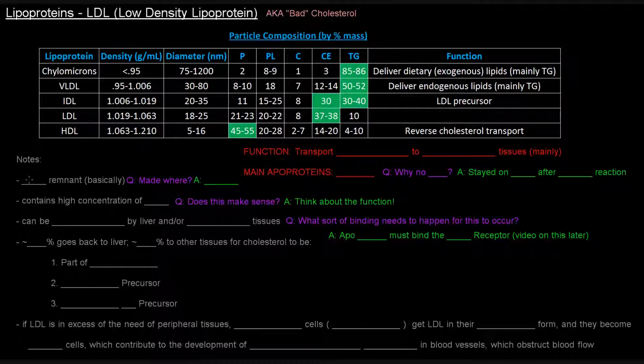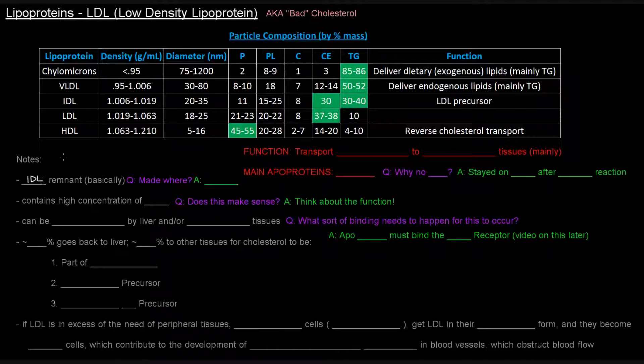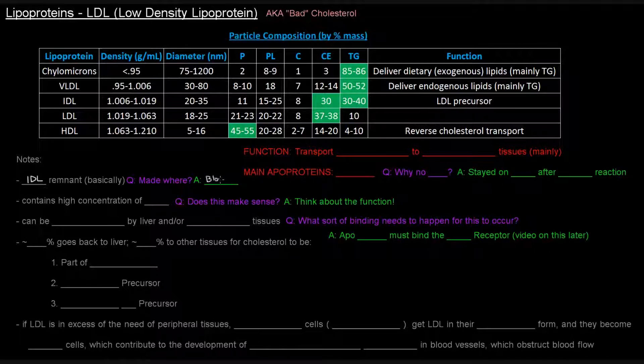Anyway, LDL is basically an IDL remnant. We said that IDL was a precursor to LDL, and that's basically saying that LDL is a remnant of IDL. Where is it made? It's made in the blood, because that's where the IDL is.